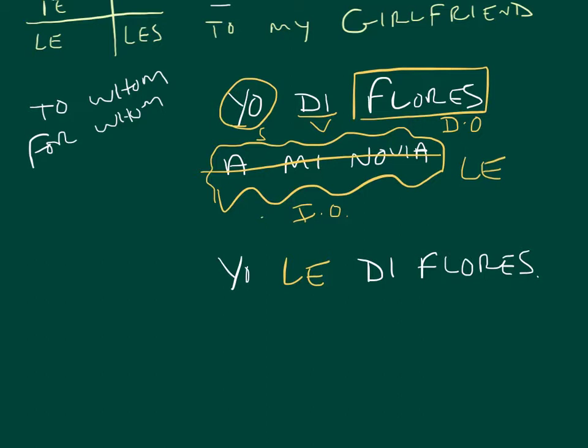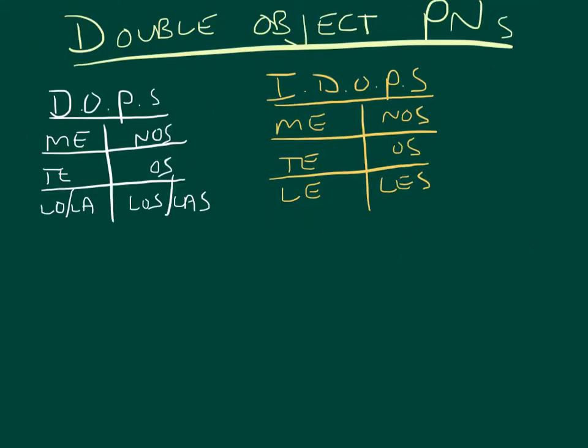What did I give? Flowers. Who did I give them to? Ella. I mean, novia. So, I gave them to her. I gave flowers to her. Versus, I gave them to my girlfriend.